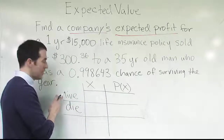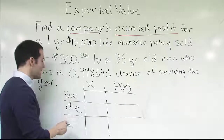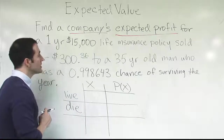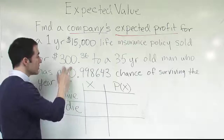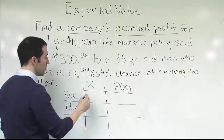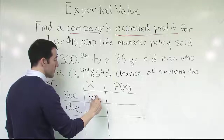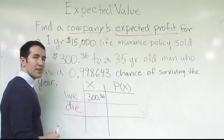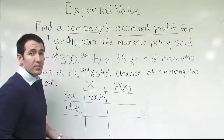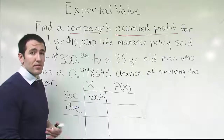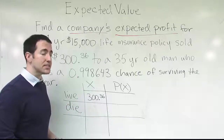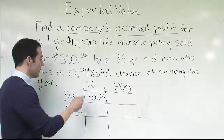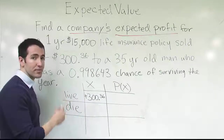Let's think about it from the company's perspective. If the customer pays for his policy and then lives the entire year, they're going to collect the $300.36 from the customer when they come in to buy the policy. That's going to be a profit for them because if the person lives the entire year, at the end of the year they have this piece of paper which is worthless — the policy has expired, they didn't die, so the paper is now useless, and the company gets to keep that $300.36. We'll put a plus sign to indicate it's a profit for the company.